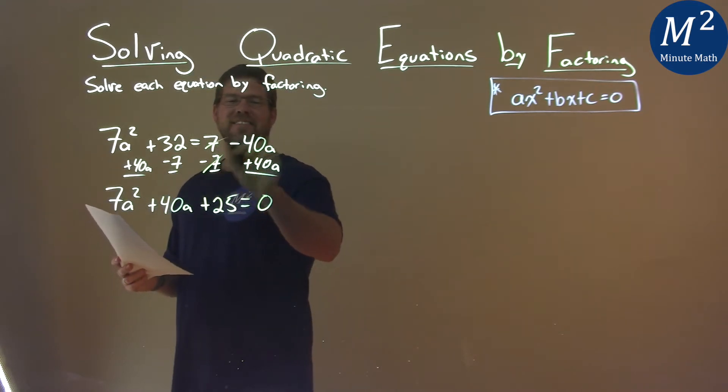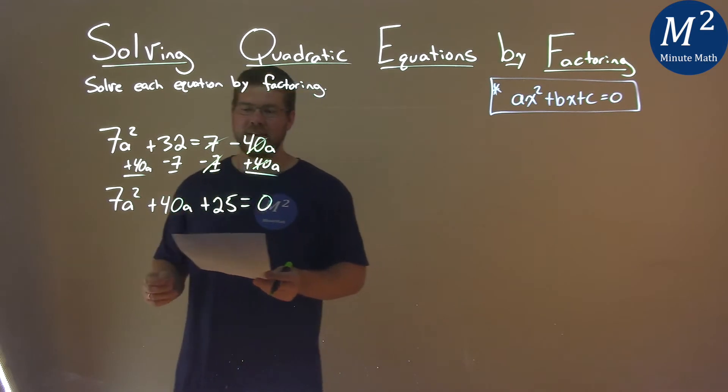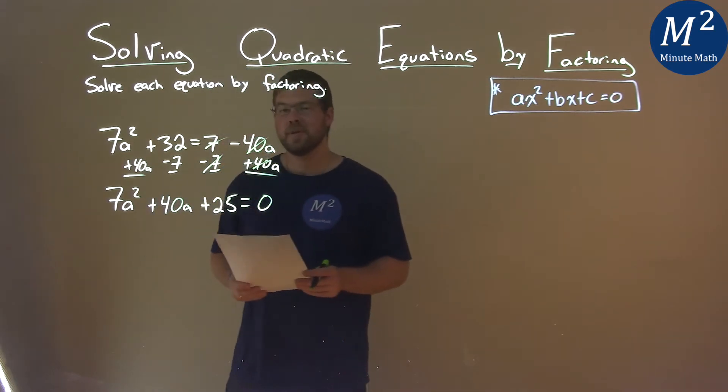So the 7s here cancel, and the 40a's cancel. Now we have a quadratic equal to 0, and we need to solve this.